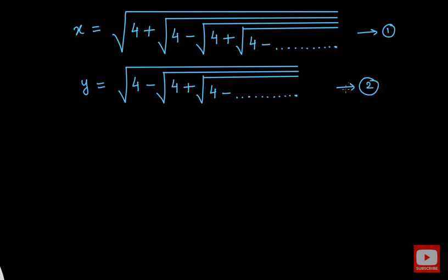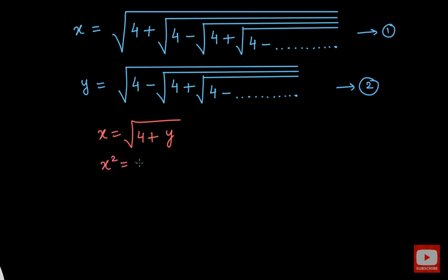Now let us substitute expression 2 into expression 1 and see what we get. We have x equal to square root of 4 plus this part — the part after 4 plus is nothing but y. So we get x equals square root of (4 + y). Let us simplify by squaring both sides, giving x squared equal to 4 plus y. Bringing y to the left side: x squared minus y equals 4. Let this be equation number 3.